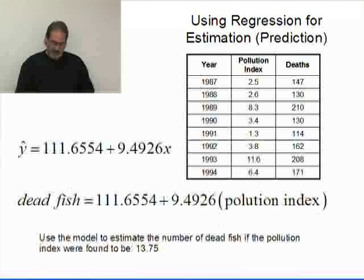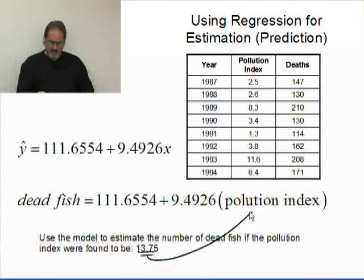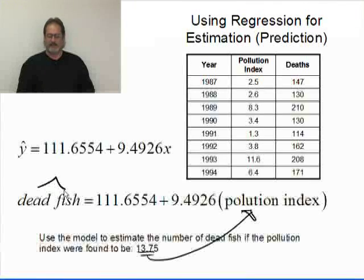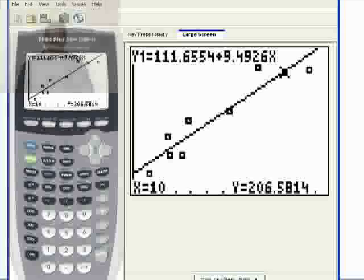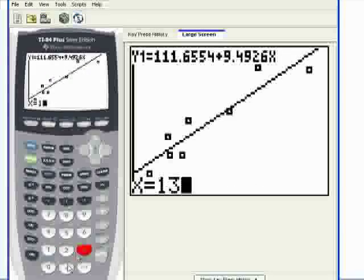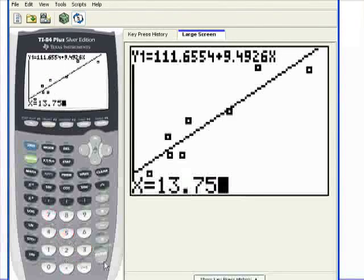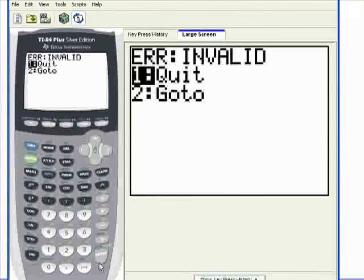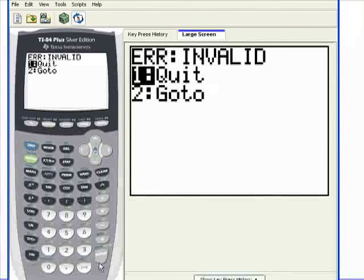Next, we need to estimate the number of dead fish with a pollution index of 13.75. That means put 13.75 in for pollution index, and the value we get out will be our estimate for dead fish. I'll go back to the calculator, type in 13.75, and oops, got an error. Actually, this error is good because it's telling you that you shouldn't have done that. Let's see what actually happened here.